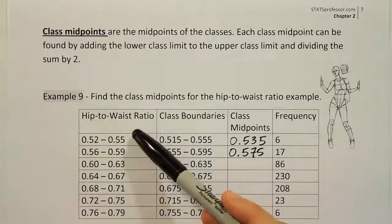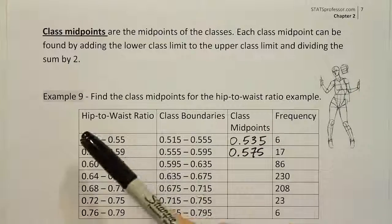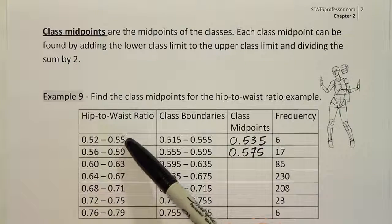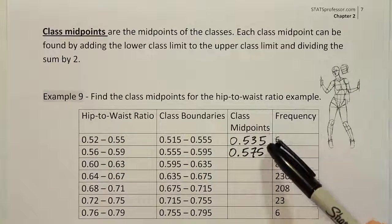And the way we do that is we basically average the class limits. So we'll add the lower class limit to the upper class limit and divide by 2. That's how I produced this answer and this answer.